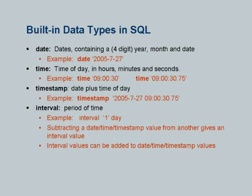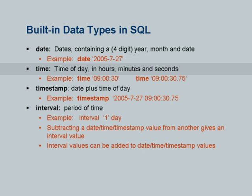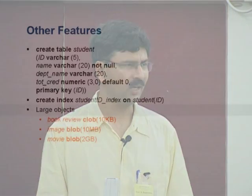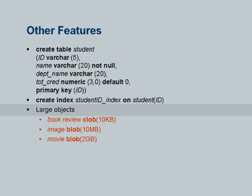SQL has several built-in data types: DATE, TIME (time of day — Oracle notably does not support this), and TIMESTAMP (date plus time of day). For large objects, SQL provides CLOB (character large object) and BLOB (binary large object). Regular attributes must fit within a database page (typically ~16 KB), so large objects are stored separately with a pointer in the tuple. Accessing a BLOB is done programmatically by reading or writing bytes, similar to a file — not by fetching the whole object at once.